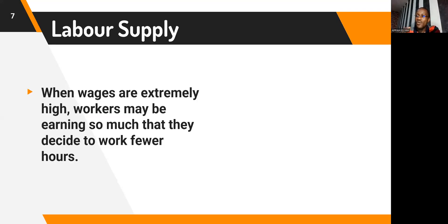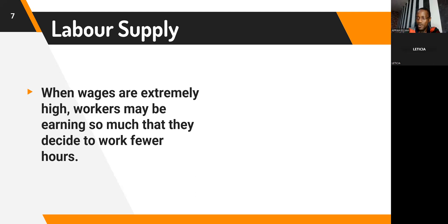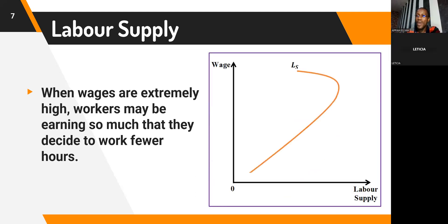However, sometimes when wages are very high, workers may be earning so much that they actually decide to work fewer hours. If your wage rate is very high, you may find that working just five hours a day still earns you a sufficient income to make ends meet. When the wage rate becomes very high, workers realize they are earning enough that they can work fewer hours and still meet their income needs — and so the labor supply curve becomes backward sloping.